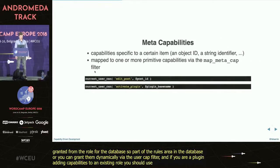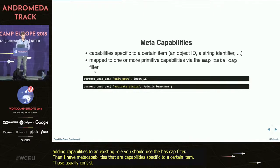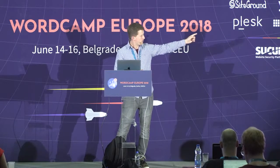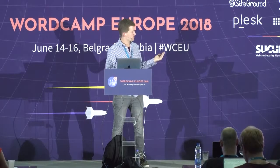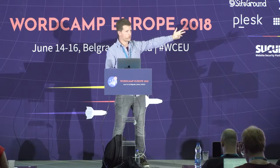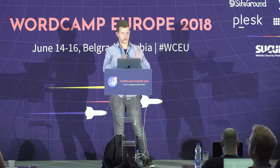We also have meta capabilities, which are capabilities specific to a certain item. Those usually consist of a verb and a singular noun. For example, we had edit_posts — the meta capability is more specific: it's edit_post, singular. As you can see, you can pass in the post ID into current_user_can. current_user_can actually supports any arbitrary arguments, but the common practice should be to pass the context. If you want to check if someone can edit a post, you should pass the post ID. If you want to check if someone can activate a specific plugin, specify that plugin's base name.